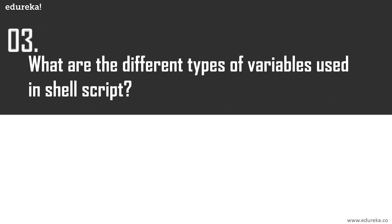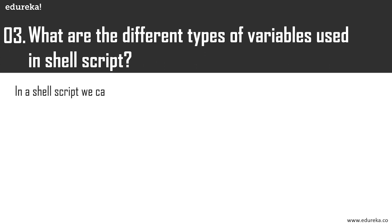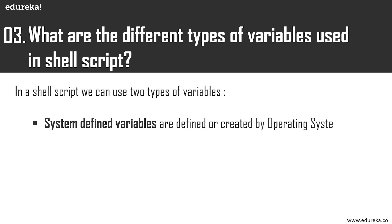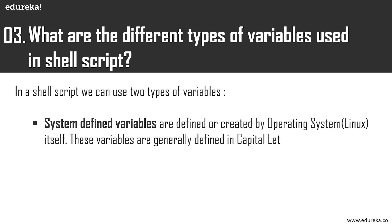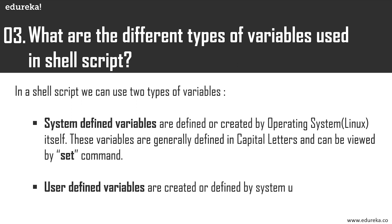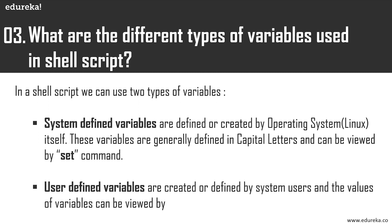What are the different types of variables used in a shell script? There are basically two types: system variables and user-defined variables. System variables are defined by the operating system and are generally written in capital letters, viewable with the 'set' command. User-defined variables are created by the system user and can be viewed using the 'echo' command.